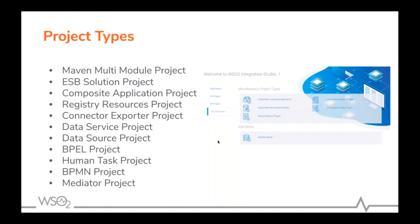In Integration Studio we have several project types depending on the use case. Mainly we have a Maven multi-model project, ESB solution project, composite application project, data service, BPL, and BPM projects. We choose according to the use case — for proxies and APIs we use the ESB solution project, and for BPM workflow projects we use BPL or BPM projects accordingly. These are the supported project types in Integration Studio.